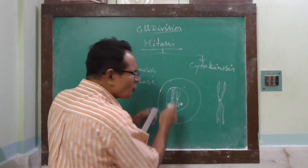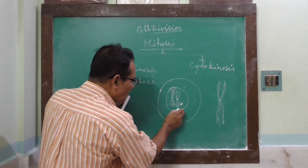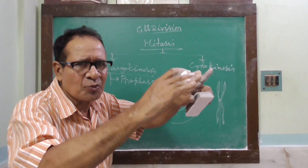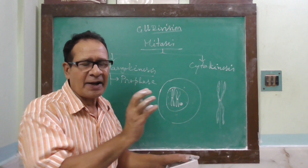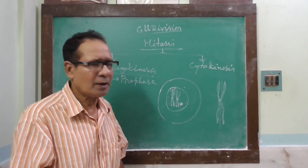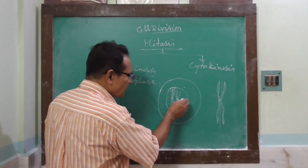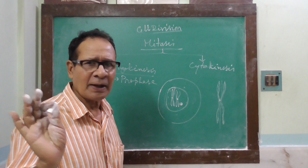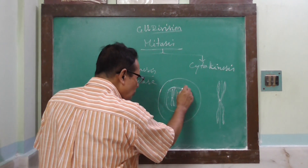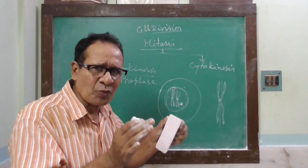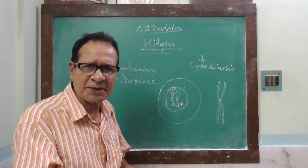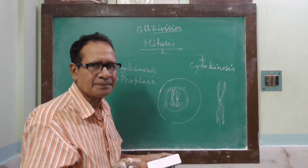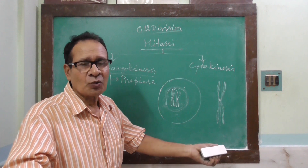The chromosomes gradually move towards the periphery of the nuclear membrane, and empty space appears at the center. Then the nucleolus and nuclear membrane gradually disappear, and the chromosomes now lie open within the cytoplasm — that is, they remain free.